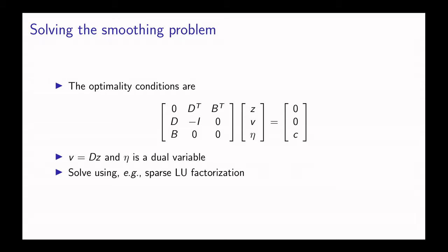Where we've added an extra variable v which we make equal to D times z, and eta is a dual variable for the constraint. So to solve the Kalman smoothing problem we have to solve this linear system.